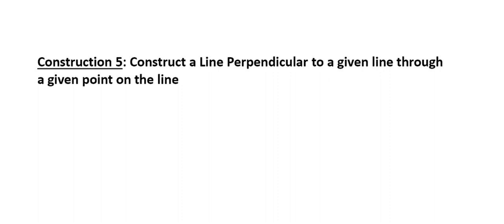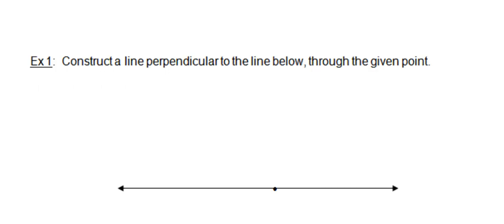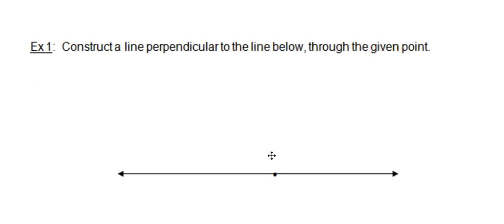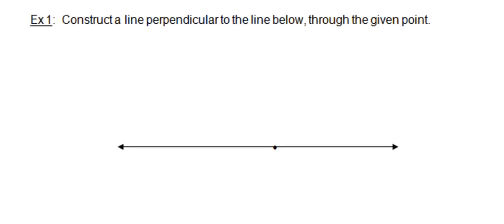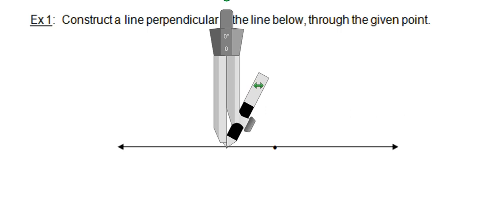The next construction you need to learn is to construct a line perpendicular to a given line through a point on that line. Given this point on this line, construct a perpendicular through the point. Rather than a new method, let's tie this back to a construction you already know — the perpendicular bisector.